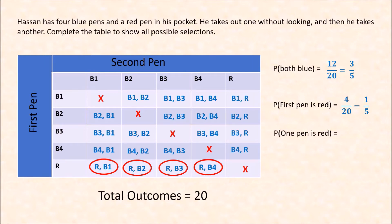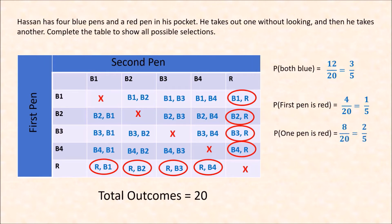What is the probability that exactly one pen is red? It doesn't matter if it is the first draw or the second draw. So we consider B1, R; B2, R; B3, R; and B4, R — plus R, B1; R, B2; R, B3; and R, B4. That's a total of 8 out of 20, or 2 fifths.